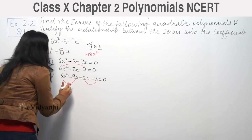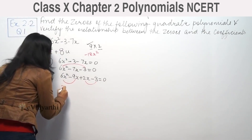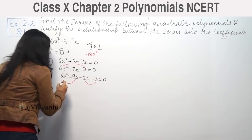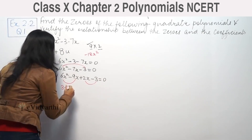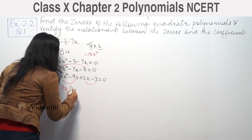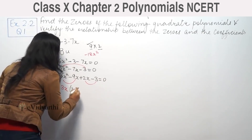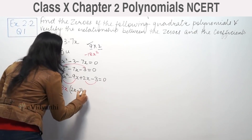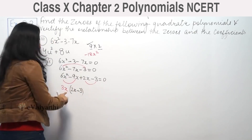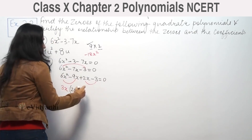Now we group the two pairs of terms. From the first two terms, 6x squared minus 9x, the common factor is 3x. We take 3x common and get 2x minus 3 equal to zero.